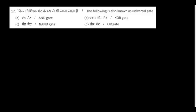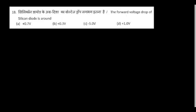The following is known as a universal gate. All of you know. The forward voltage drop of a silicon diode is around 0.7 volts. 0.3 volts is for germanium diode.